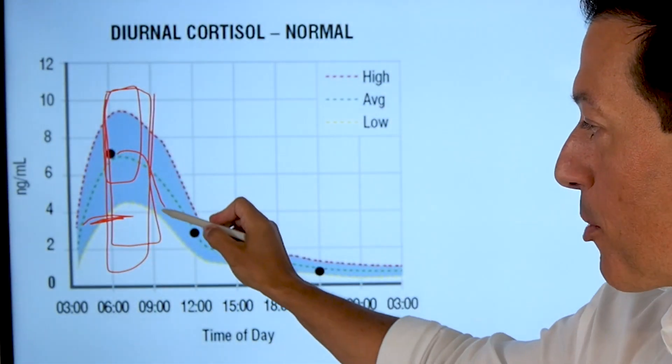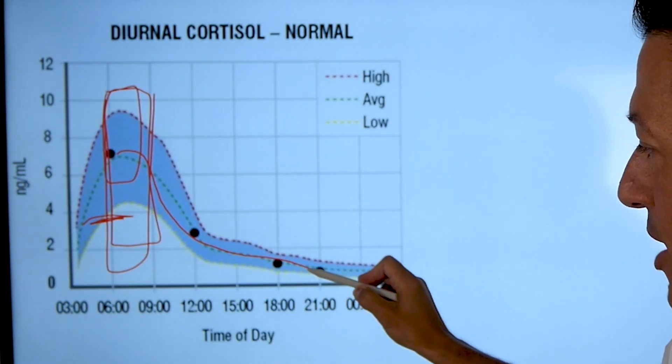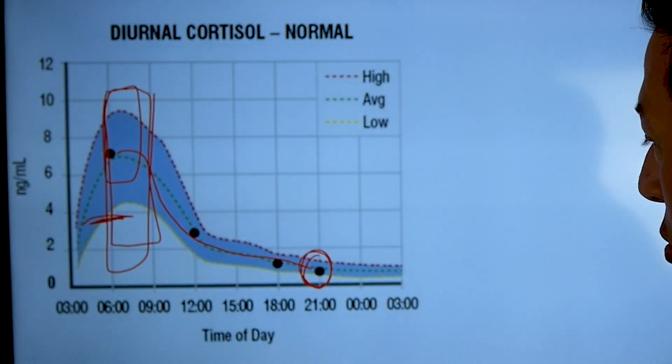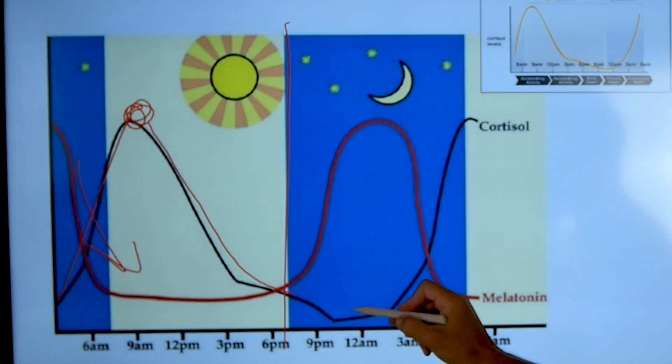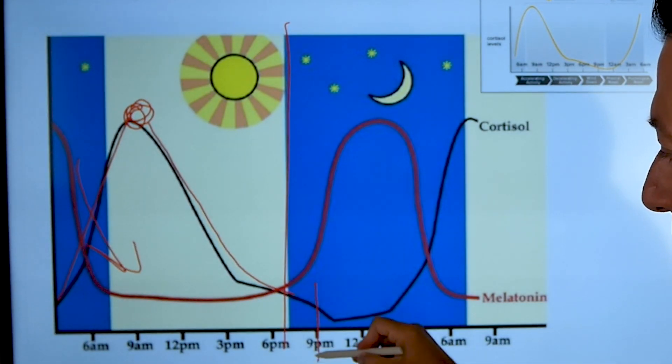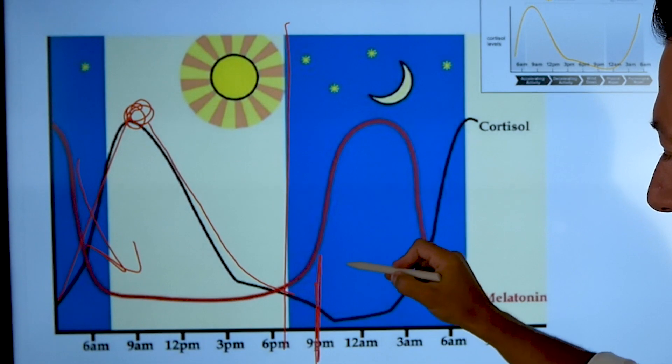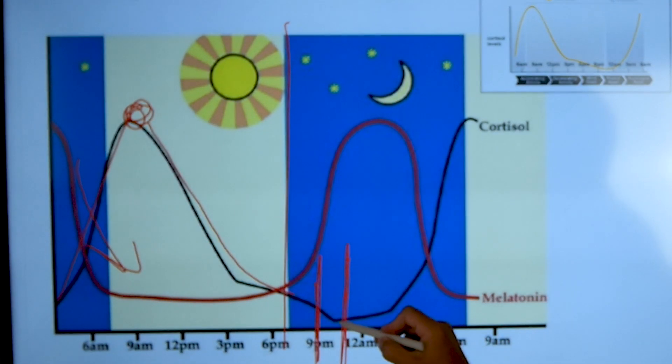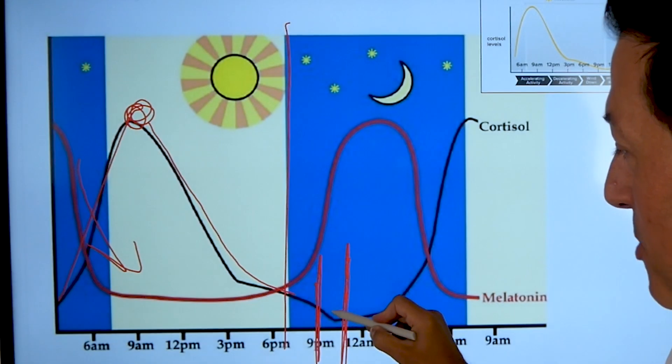You can see it just start to normally fall throughout the day to this point, one point right here. Here's 9 p.m., here's 10 p.m. Where's the lowest point of cortisol? 9:30 p.m.